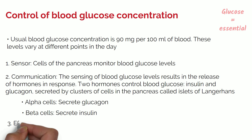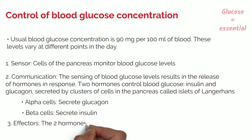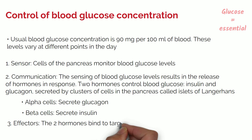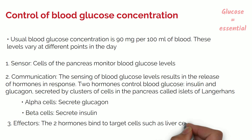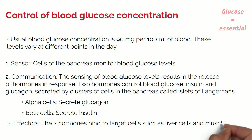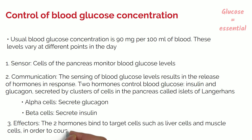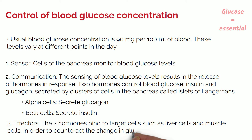And number three, effectors. The two hormones bind to target cells such as liver cells and muscle cells in order to counteract the change in glucose levels in the blood.